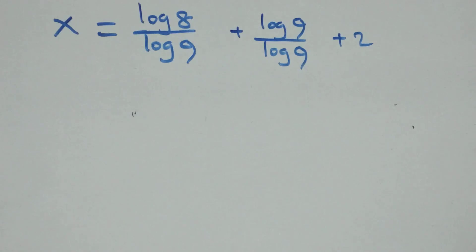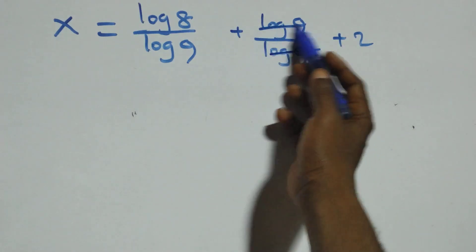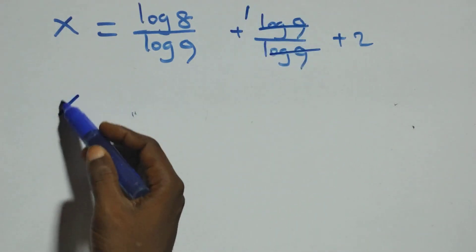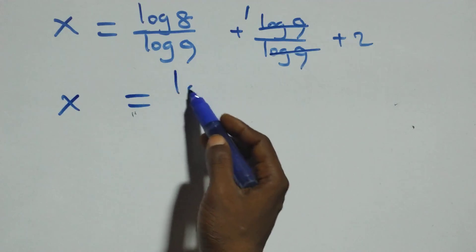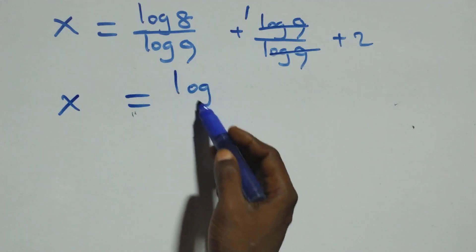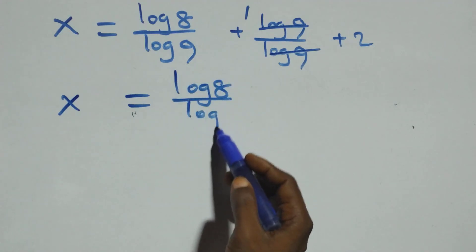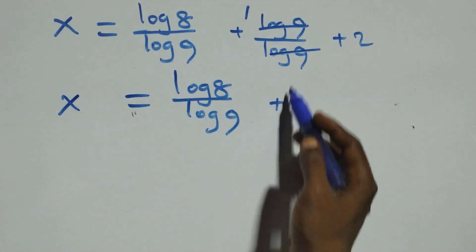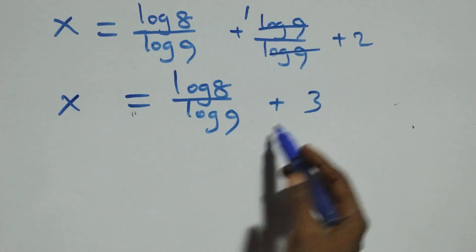Log 9 cancels with each other in one term, which implies x equals log 8 over log 9 plus 1 plus 2, and 1 plus 2 gives 3. So x equals log 8 over log 9 plus 3.